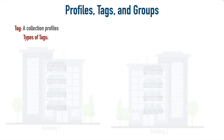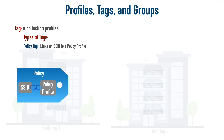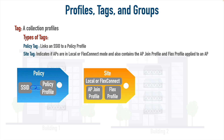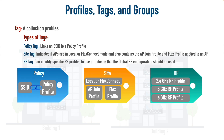There are three types of tags. The first is a policy tag, which links the wireless network name — the SSID, the service set identifier — to the policy profile. The second is the site tag, which tells us whether an access point is being controlled by a local wireless LAN controller in local mode, or by a WLC at another site in FlexConnect mode. The site tag also contains the AP join profile and the flex profile applied to an AP. Finally, we have the RF tag, the radio frequency tag, which specifies what bands of frequencies are used and some of the settings within those bands.